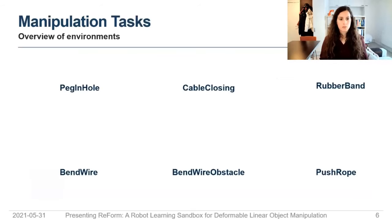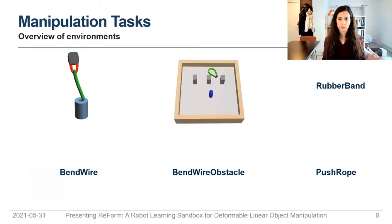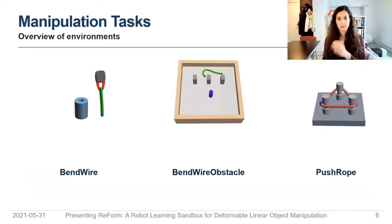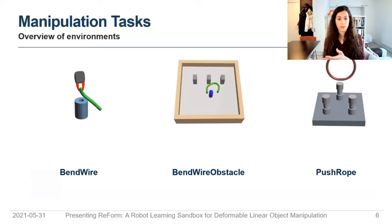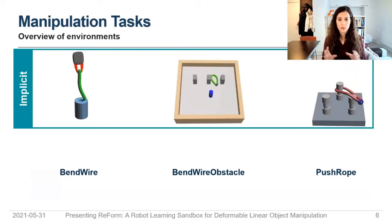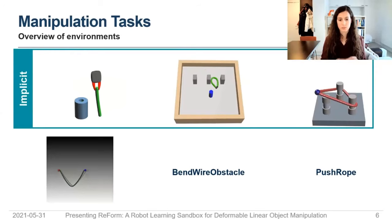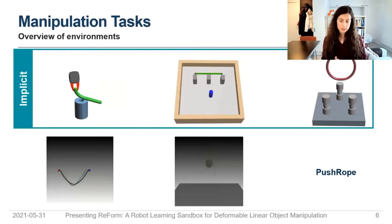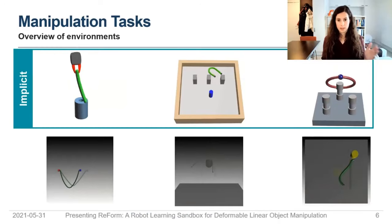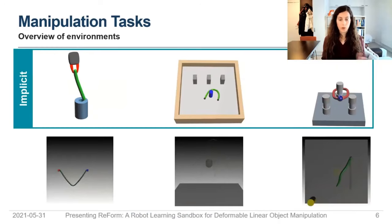For this we proposed six environments: one where we insert a soft bag into a hole; cable closing, where we wrap a cable around a cylinder; a similar principle but with a rubber band. These are implicit shape control tasks — we don't care exactly how it looks, we just want the task completed. Then we have explicit shape control tasks like bending a wire, doing the same with an obstacle, and manipulating a rope on a surface.